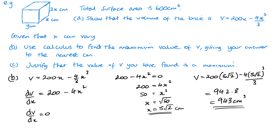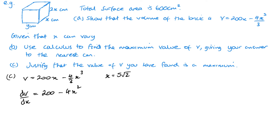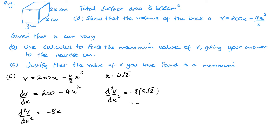We need to justify that the value of V found is a maximum by differentiating a second time. d²V/dx² = −8x. Substituting x = 5√2 gives d²V/dx² = −8 × 5√2 = −40√2. This is clearly a negative number, therefore it is a maximum. So d²V/dx² < 0, confirming that x = 5√2 is a maximum.